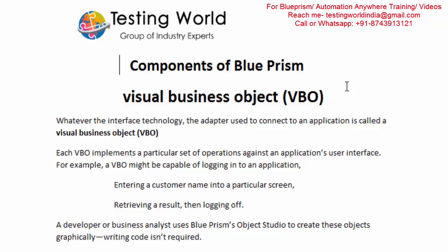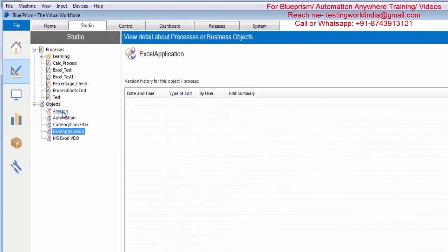When you want to interact with any other application — a window-based application, a web-based application, a Java client application, or you want to read or write data from an external source — in that kind of scenario we need Object Studio. Whatever automation we do in Object Studio we call it a Visual Business Object.